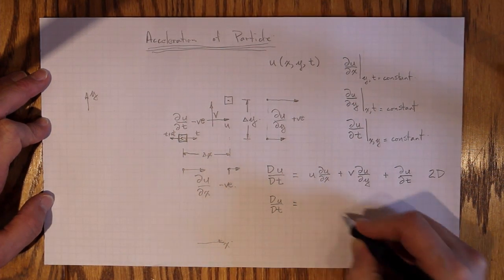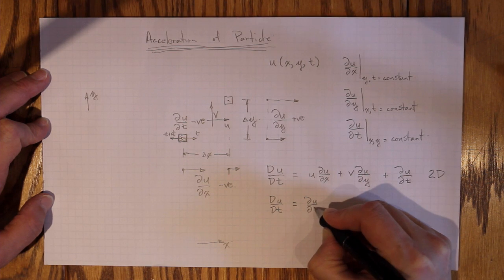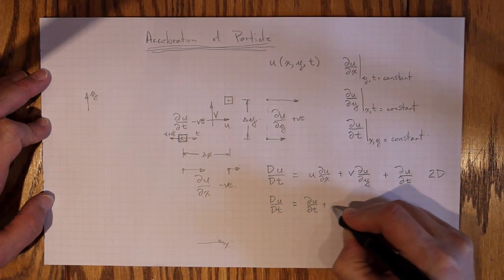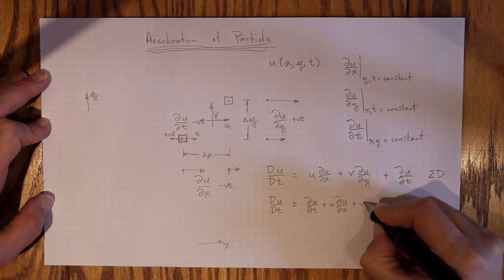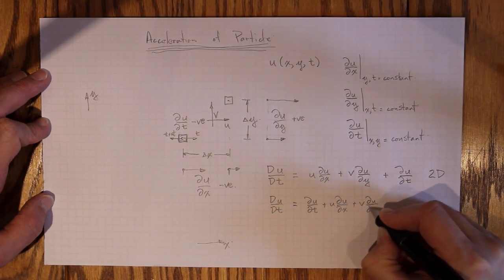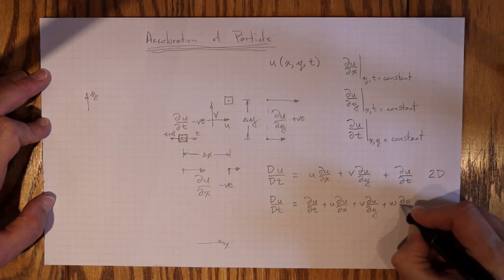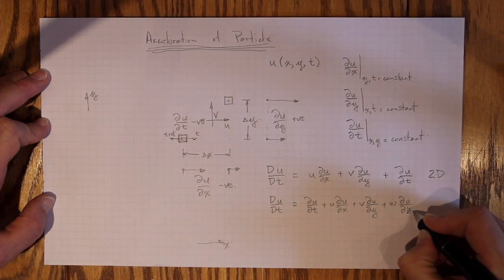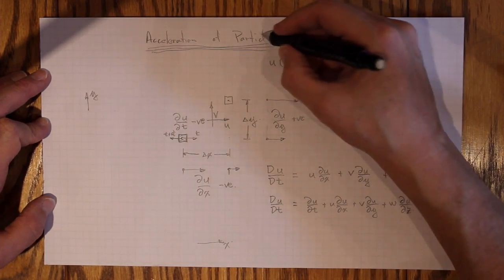The acceleration for the particle is ∂u/∂t plus u∂u/∂x plus v∂u/∂y plus w∂u/∂z. That's the acceleration of the particle in the x direction.